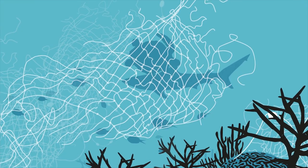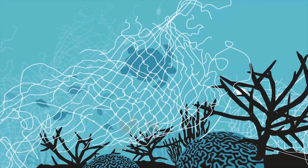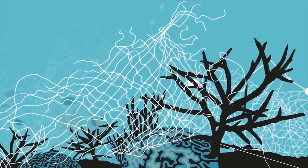Smothering coral reefs, ghost nets can cause further loss by spreading disease, parasites, and invasive species to reef environments.